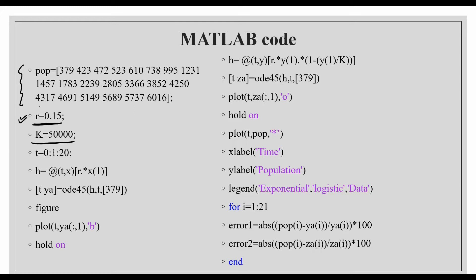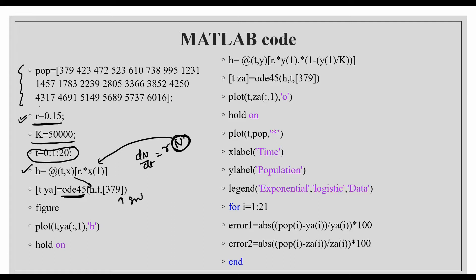We define h as a function representing the differential equation for exponential growth: dN/dt = r·N, where x1 denotes the population. Then we call ode45, MATLAB's built-in function for solving differential equations. It takes the function h, the time range from 0 to 20, and the initial condition. ode45 solves the differential equation and produces the output for the exponential model.